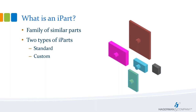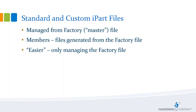There are basically two types of iParts: standard and custom iParts. The standard iPart basically consists of what we call the master file — also the factory file — and its members. The members are generated from the factory file. One reason you may want to consider using iParts is file management, which is basically done from just the one factory file.